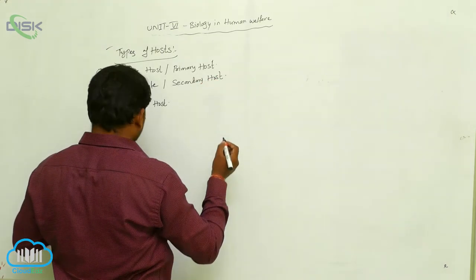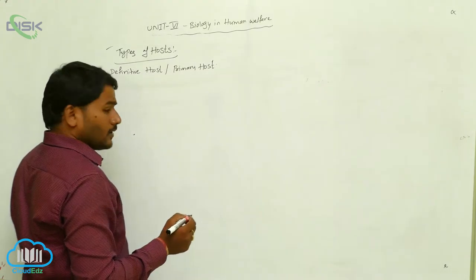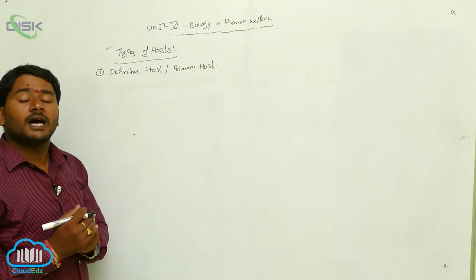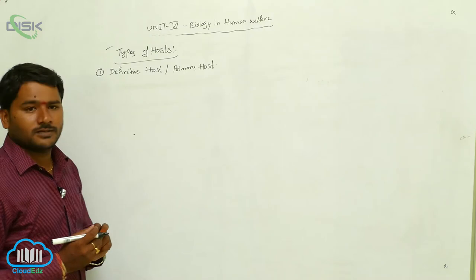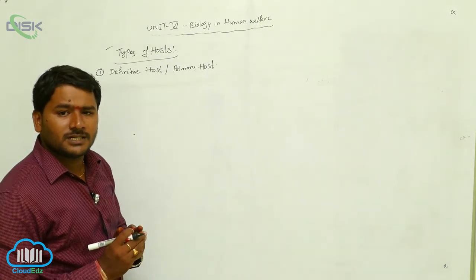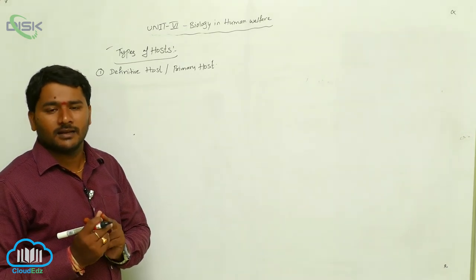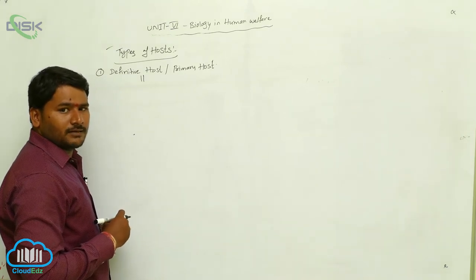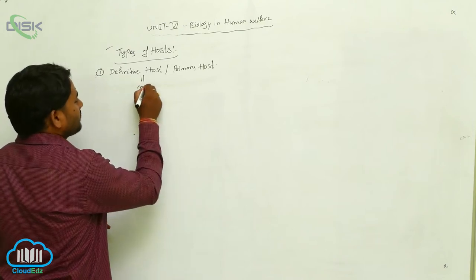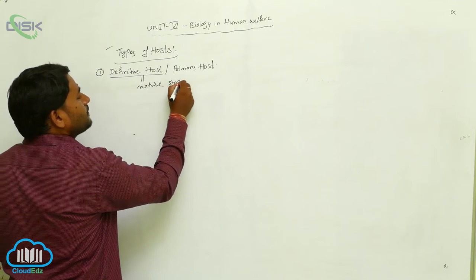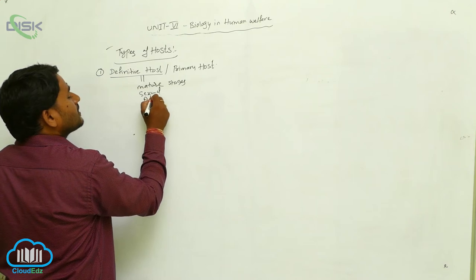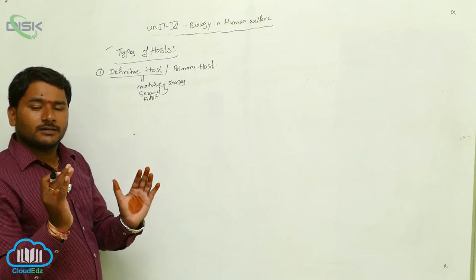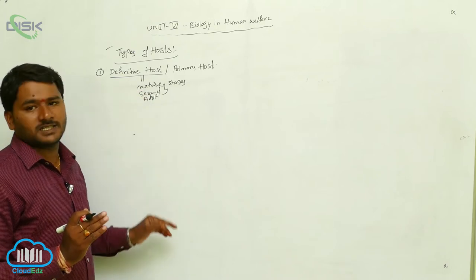If you look at the definitive host, it is the host which harbors, which lodges adult stages, or mature stages, or sexual phases. In the definitive host, parasite mature stages are present, or sexual stages are present, or adult stages are present. The host which harbors mature stages or sexual stages or adult stages is called as definitive host.